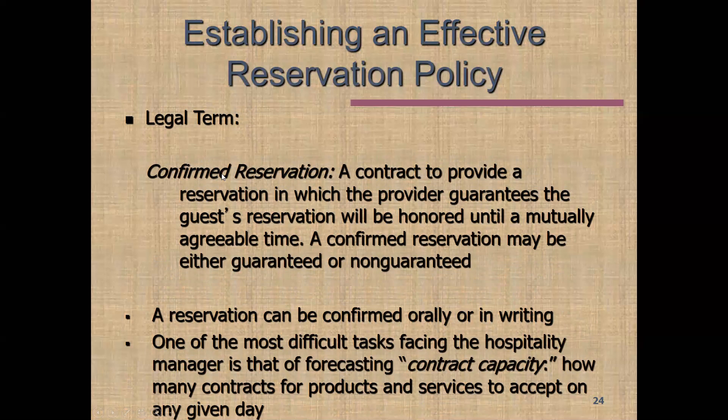How you handle a non-guaranteed reservation may depend on how you confirmed it. A confirmed reservation is a contract to provide a reservation in which the hotel guarantees the guest's reservation will be honored until a mutually agreed-upon time. A confirmed reservation may be either guaranteed or non-guaranteed. Say Bob has a non-guaranteed but confirmed reservation available until 6 PM, and it's now 6:01 PM — Larry walks in wanting the room, and Bob still hasn't arrived. I'd suggest letting Larry rent the room: the confirmed period is over and you have no guaranteed way to collect from Bob.